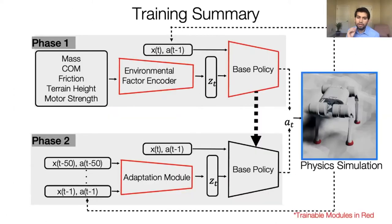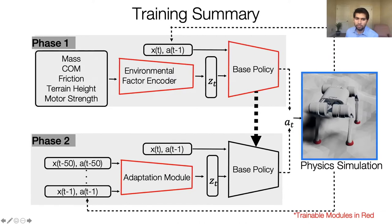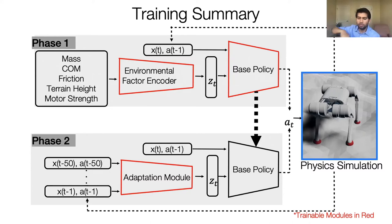Let me summarize how we train this module. Phase one is reinforcement learning: we take environment conditions, encode them into Z, and train the base policy. Both the base policy and the environment encoder are trained together via policy gradient. We deploy learning from scratch — the policy takes current state and observation and directly outputs joint angles, with no predefined leg swing motion, no demonstrations, no reference trajectory, no foot trajectory optimizer. We only use PID control at the very bottom.